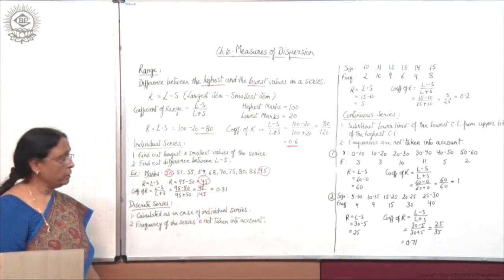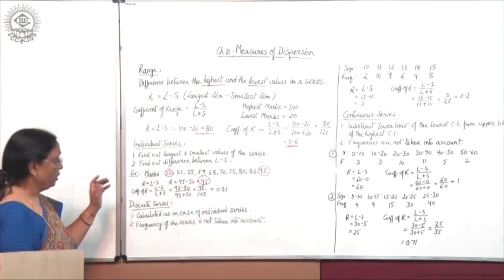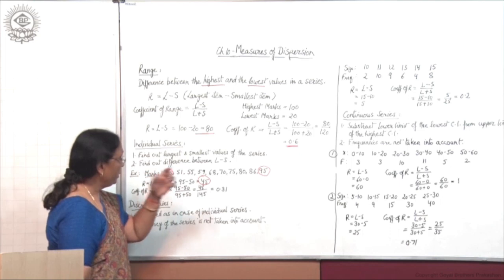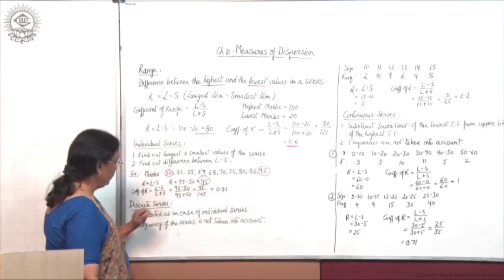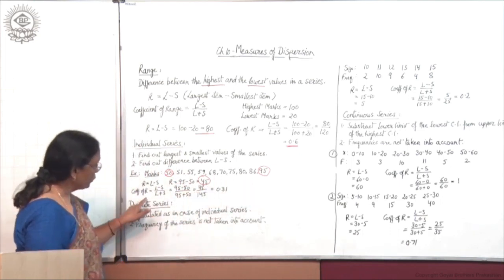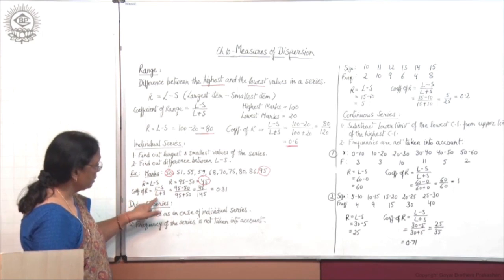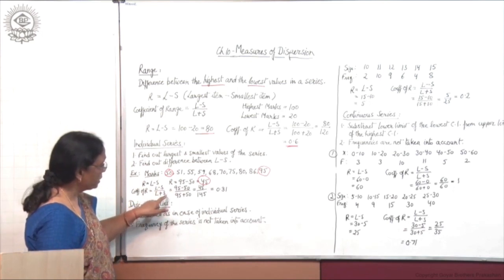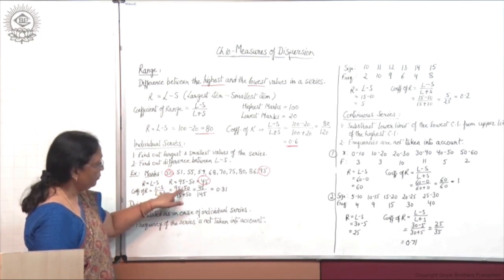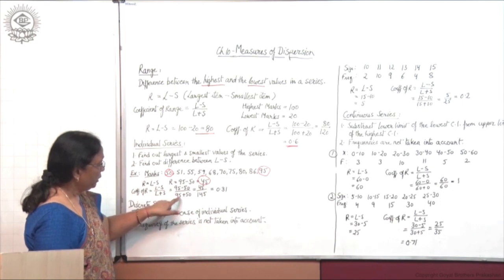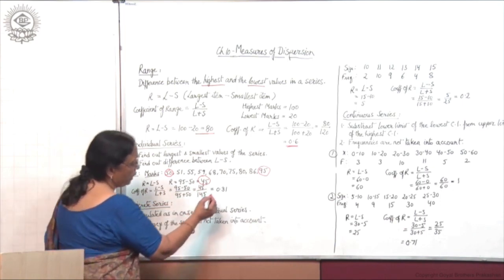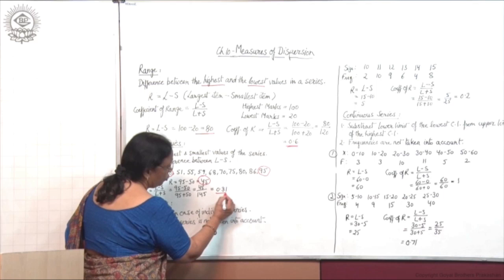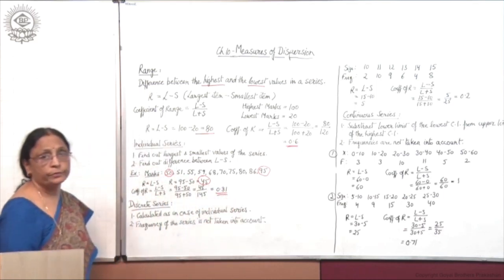Range is 45 — marks are ranging between 50 to 95. Coefficient of range = L minus S upon L plus S = 95 minus 50 upon 95 plus 50. This gives the coefficient of range. Simple calculation in the case of individual series.